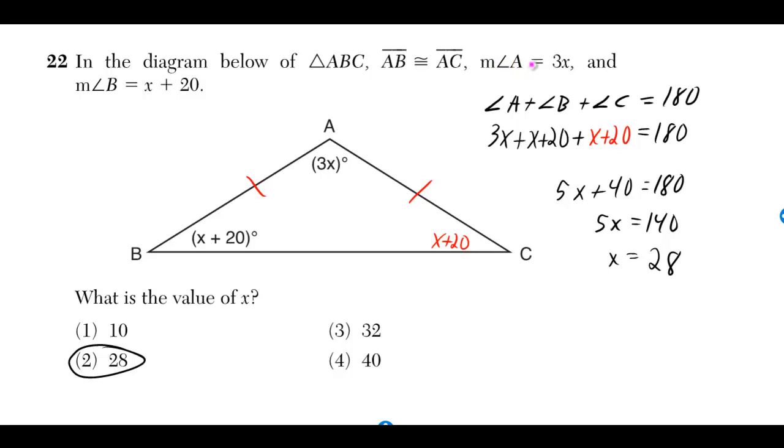They already put that A is equal to 3x and B is equal to x plus 20 in the diagram for us, so there's really no reason why that's there.